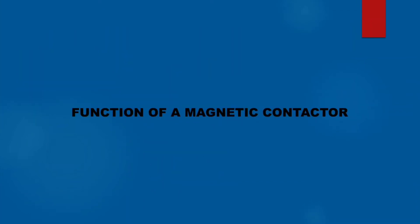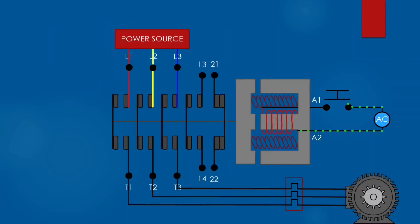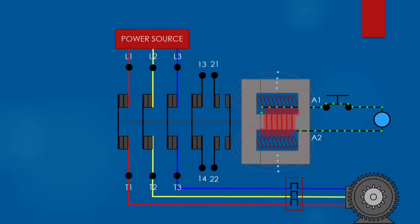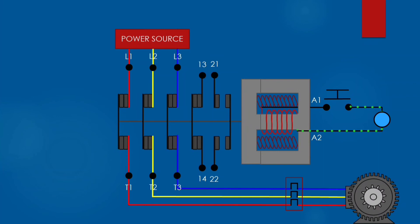Function of a magnetic contactor: when the magnetic contactor coil is energized, the movable contacts will close and the motor will run. When the coil is de-energized, the movable contacts will open and the motor will stop.